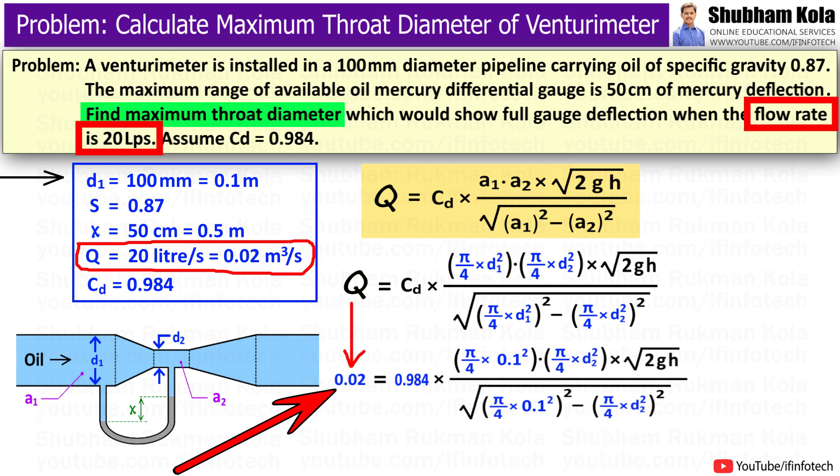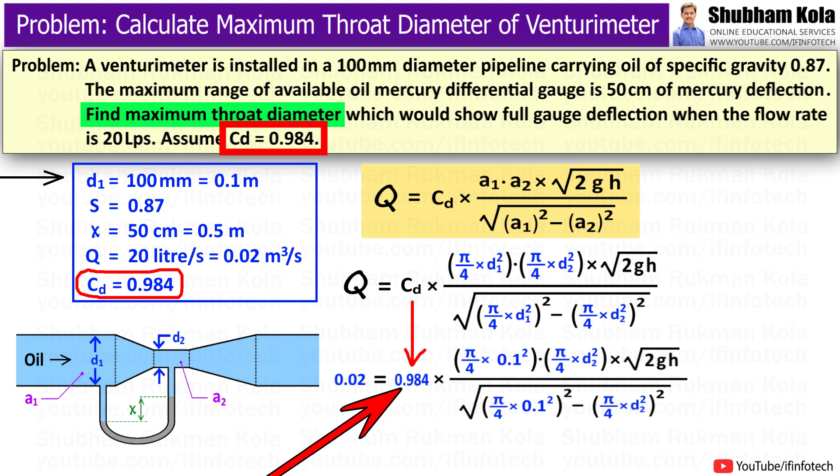In this formula, the value of discharge that is capital Q has given in problem as 0.02 m³ per second. And the value of coefficient of discharge CD has also given in problem as 0.984.